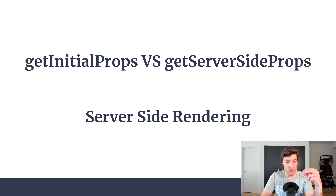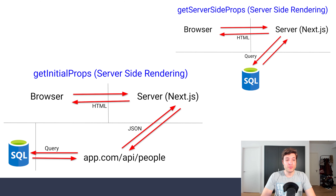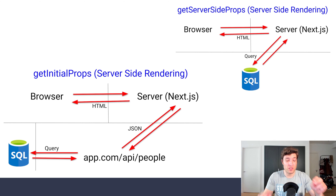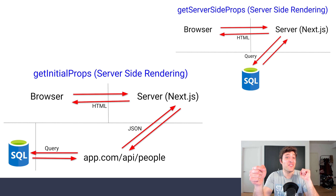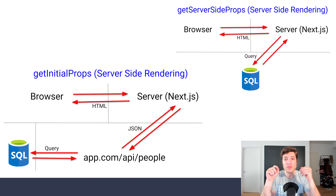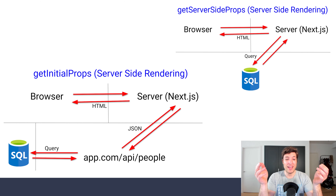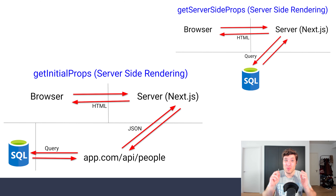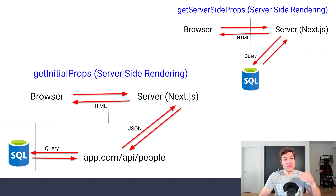Looking at server-side rendering: with GetInitialProps we have three jumps — browser → server → API/people → database and back. With GetServerSideProps at the top right, we only have two jumps and we don't need that API. So if you don't have a third-party application consuming your APIs, it's one less thing to maintain, to test, and to bug fix. That's a good benefit.